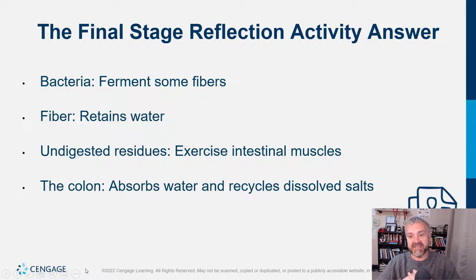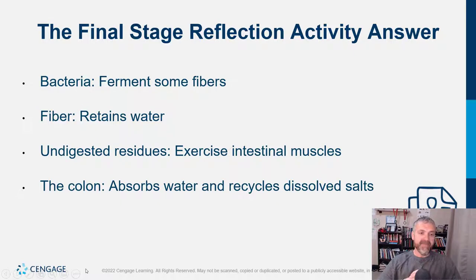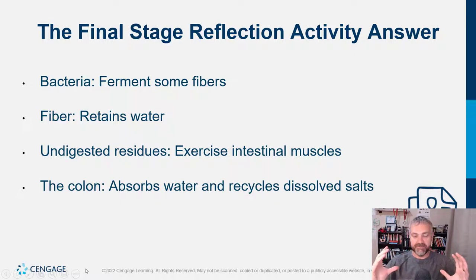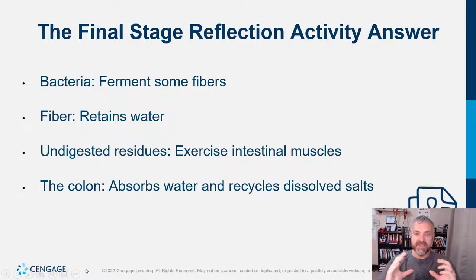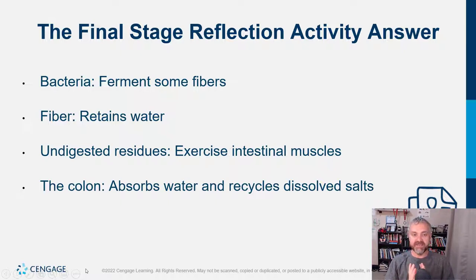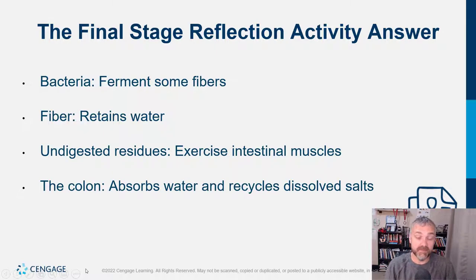As microbes ferment these fibers, they actually make fats — short-chain fatty acids, like butyrate. Those fats feed the cells of your large intestine, and those cells use that fat for the energy they need to make mucus, leaving a beautiful mucus layer around the cells of your intestines. So if you consume fiber, your intestines will directly be healthier. Those bacteria also make other vitamins for us and do all sorts of helpful things.